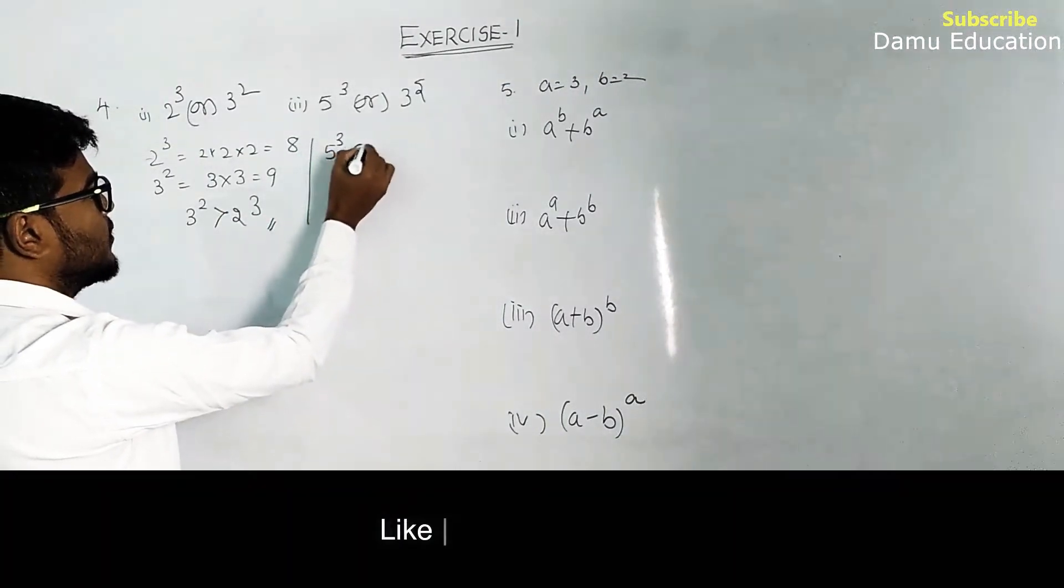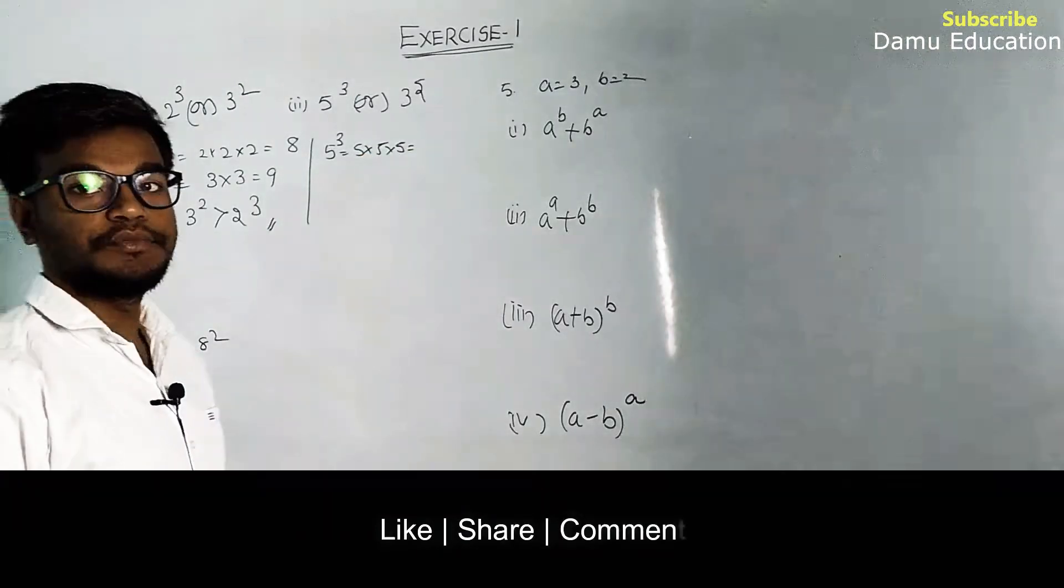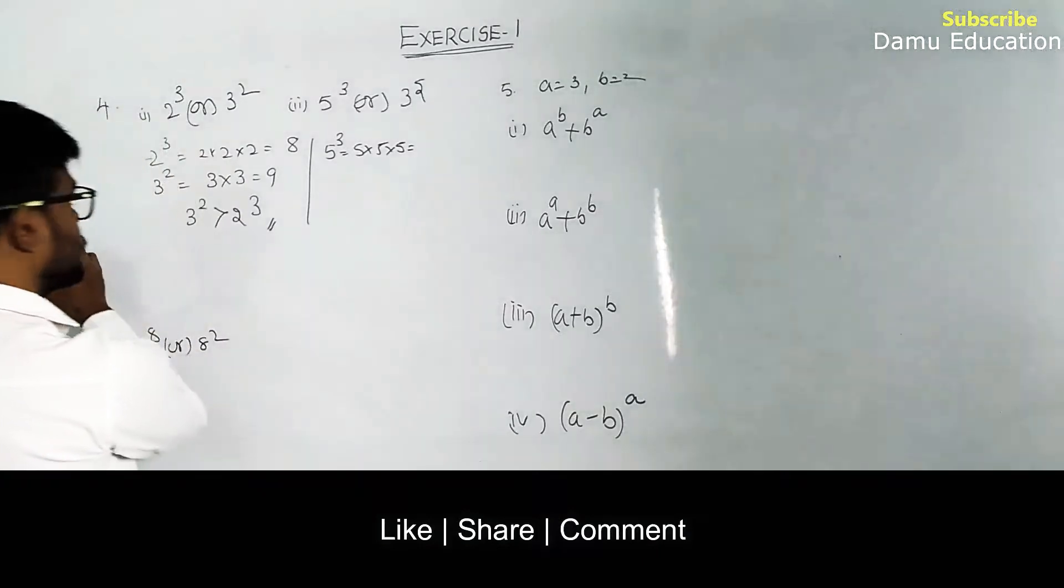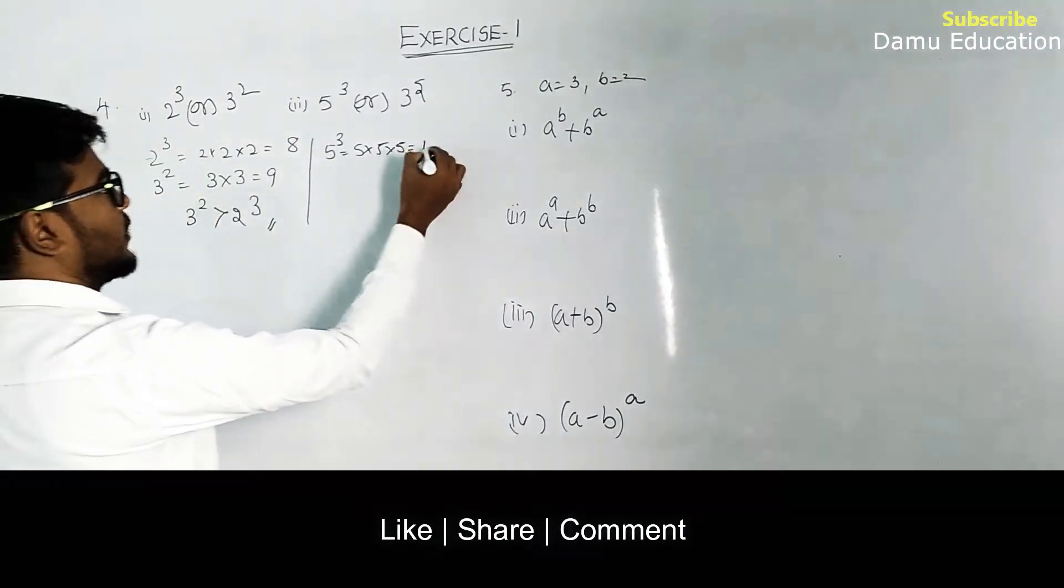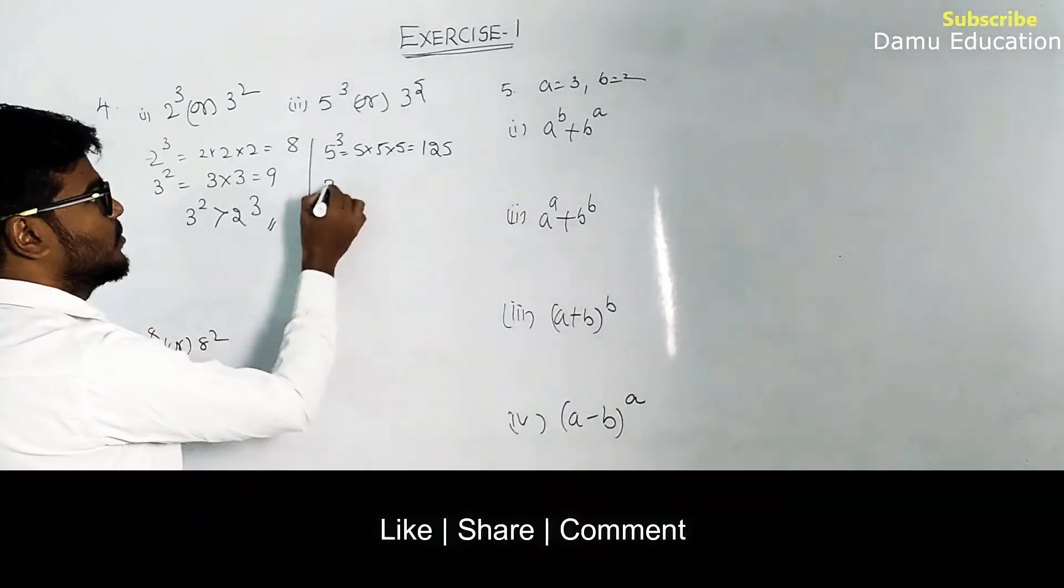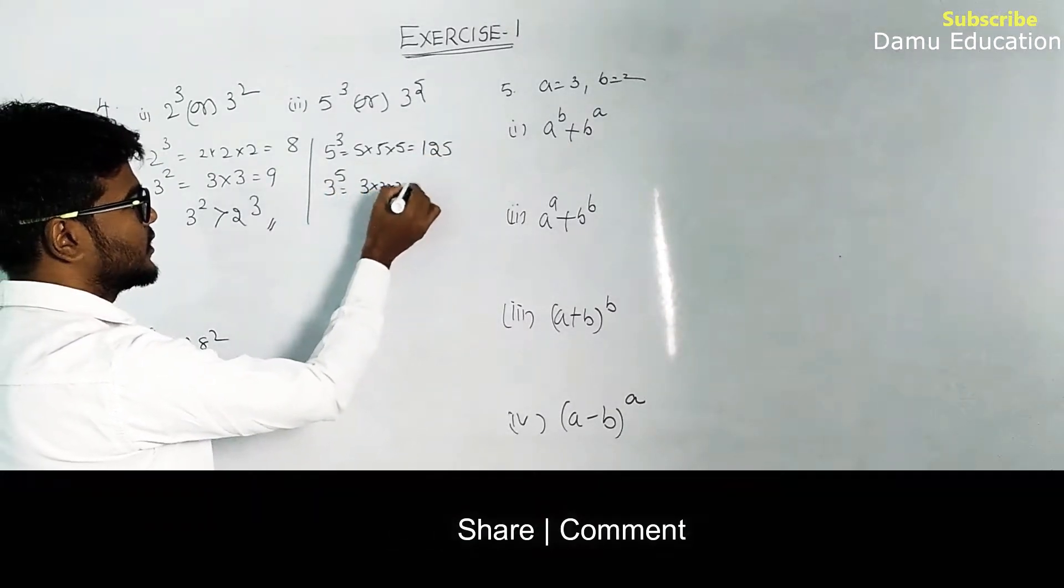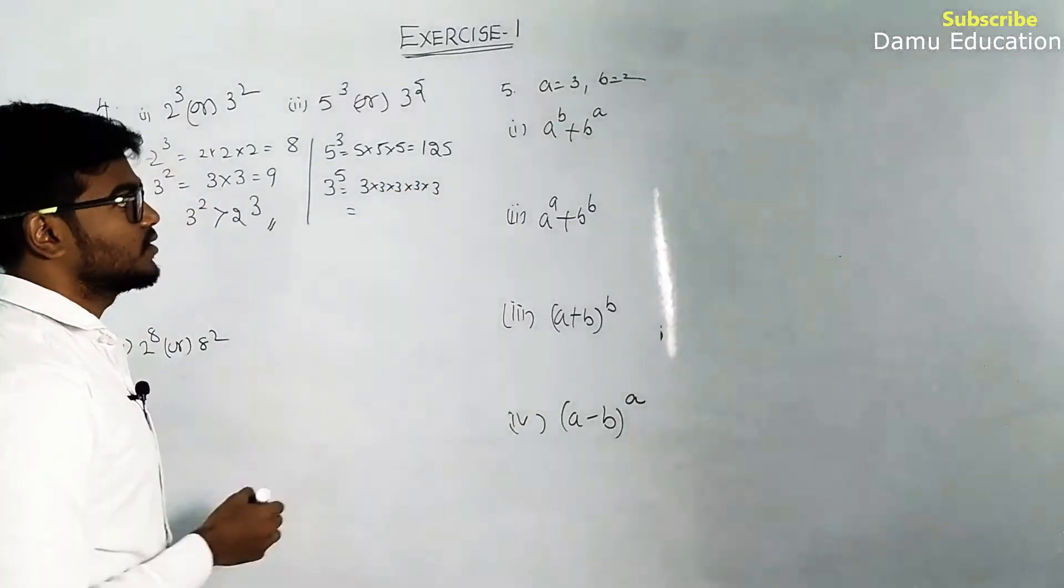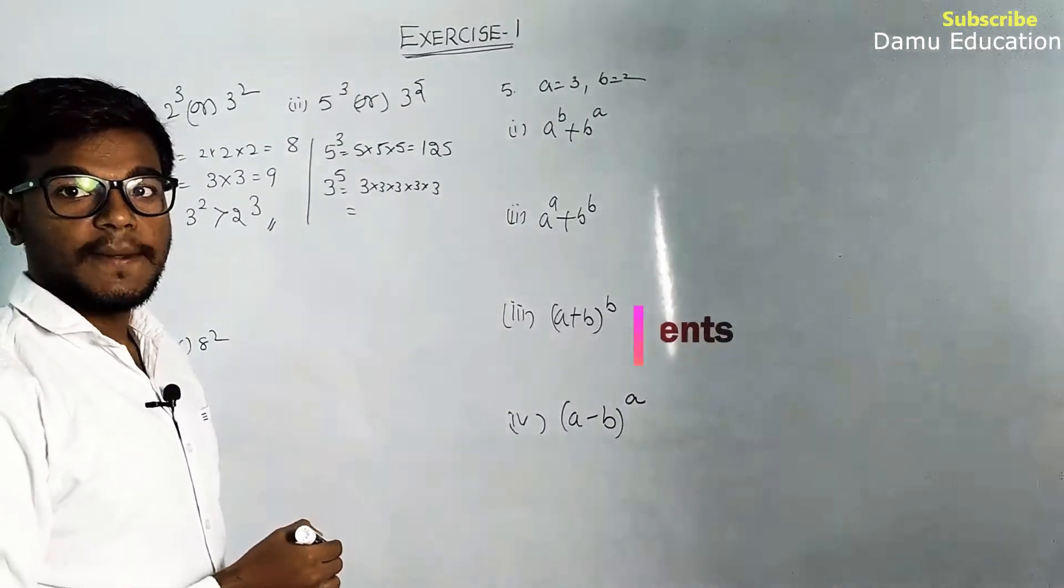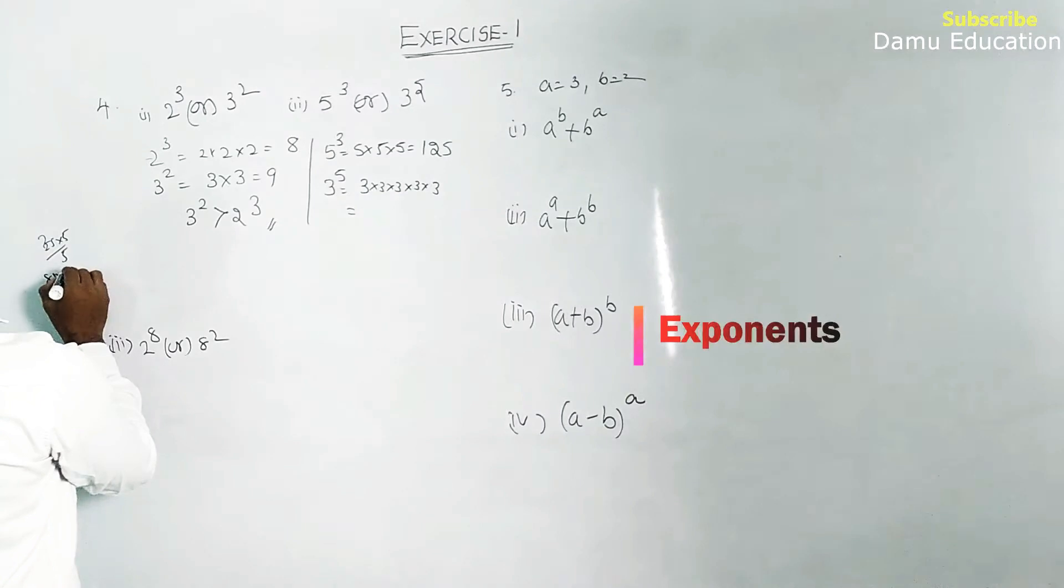Next, 5³: 5 × 5 × 5 equals 125. Then 3⁵: 3 × 3 × 3 × 3 × 3. 3 × 3 is 9, 9 × 3 is 27, 27 × 3 is 81, 81 × 3 equals 243.